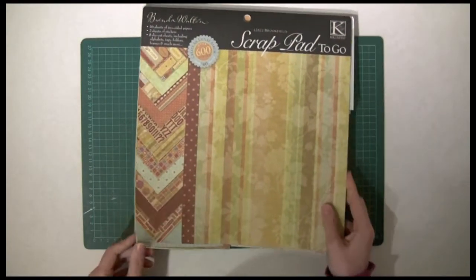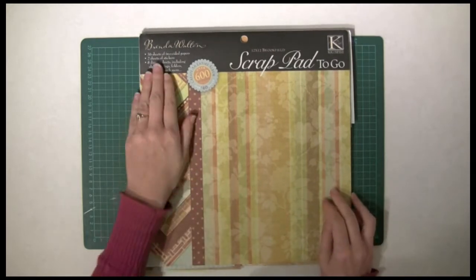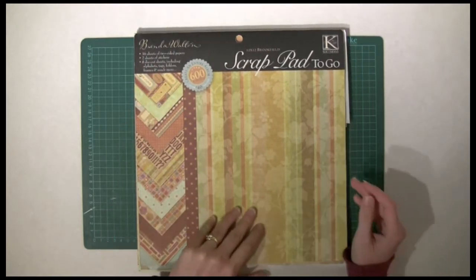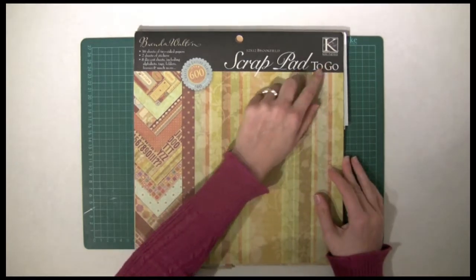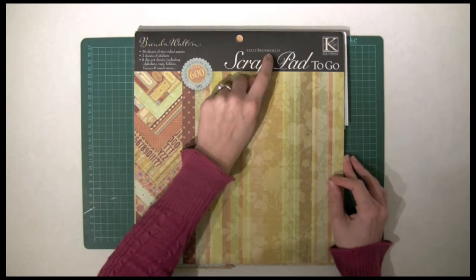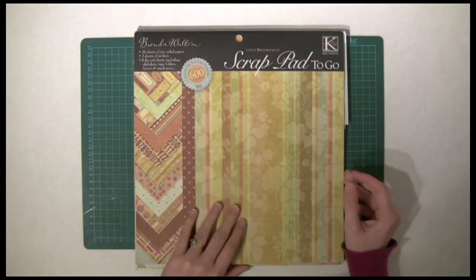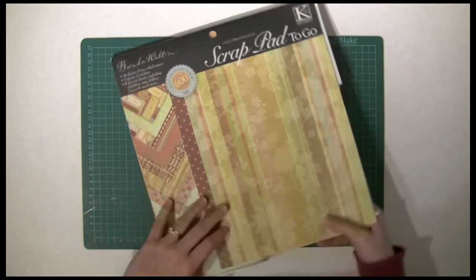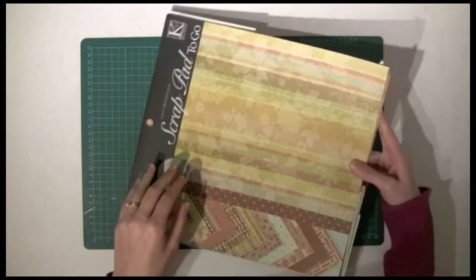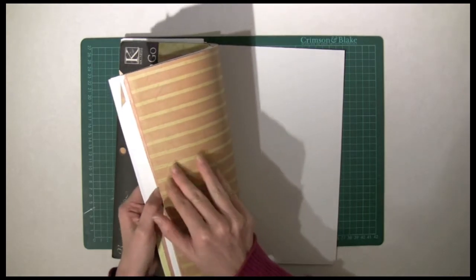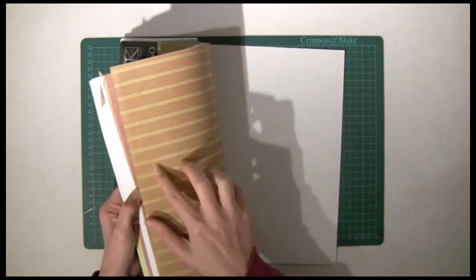For the project, I'm using this 12 by 12 pad of scrapbook paper by K and Company. It's a Brenda Walton collection called Brookfield. I've had this for years but keep coming back to it because the colors are beautiful and autumnal. There's a good selection of designs with stripes and script in the background.